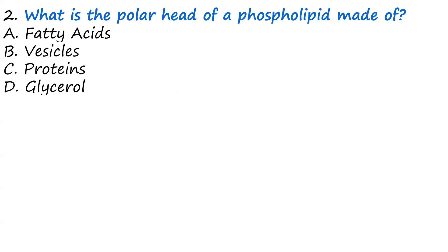Question two: What is the polar head of a phospholipid made of? A, fatty acid. B, vesicles. C, proteins. D, glycerol. Phospholipids are made of a phosphatidic acid and a polar head group. The polar head group can be glycerol, serine, or other groups. The correct answer is glycerol, which attaches to phosphatidic acid to form a glycerophospholipid.